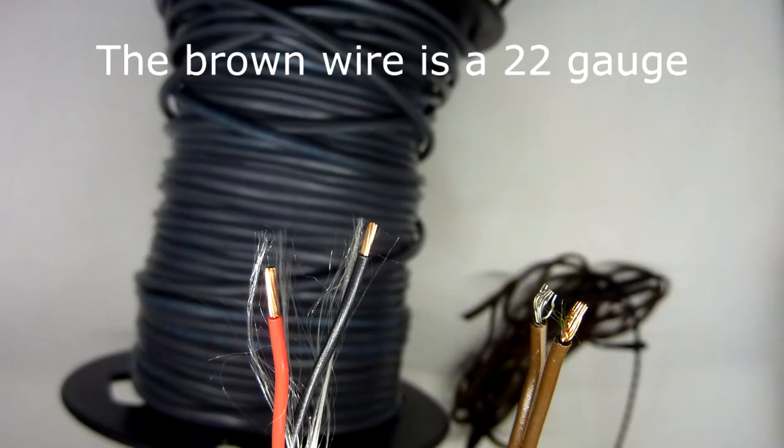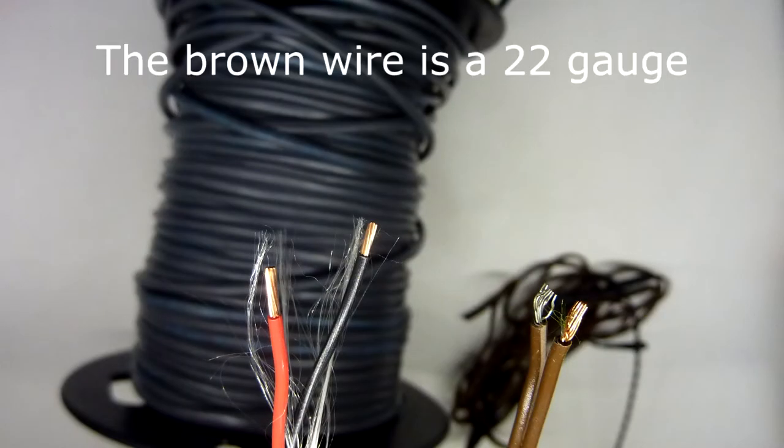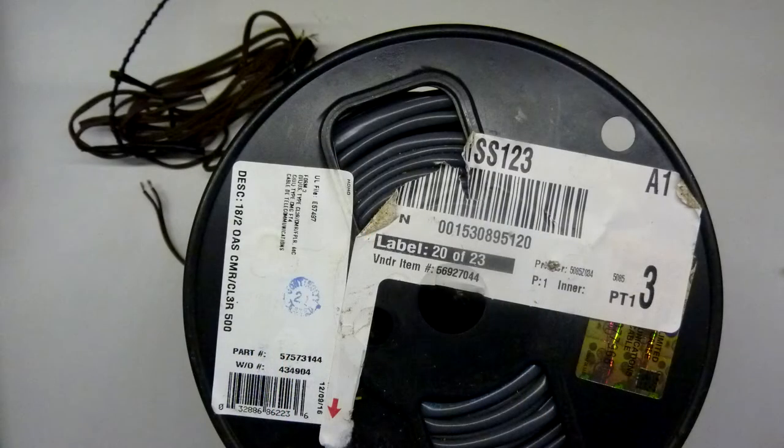For wire, I like to use this 18-2 shielded security wire that you can buy at Home Depot or Lowe's. It's very easy to work with and has a nice casing on it.